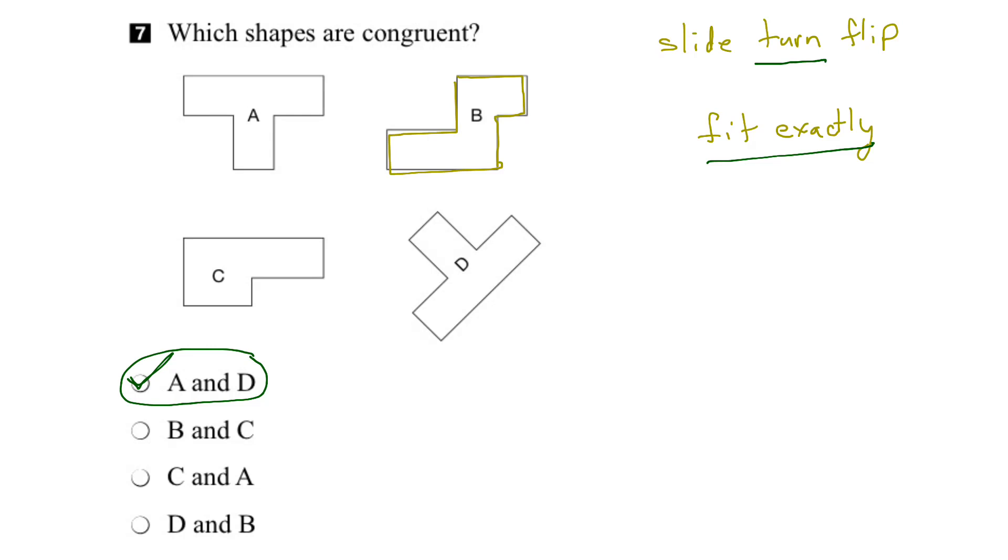Alright, let's try flipping. So if I took this and flipped it, and then moved it over, nope, nope, nope. So B is not congruent with any other shape.